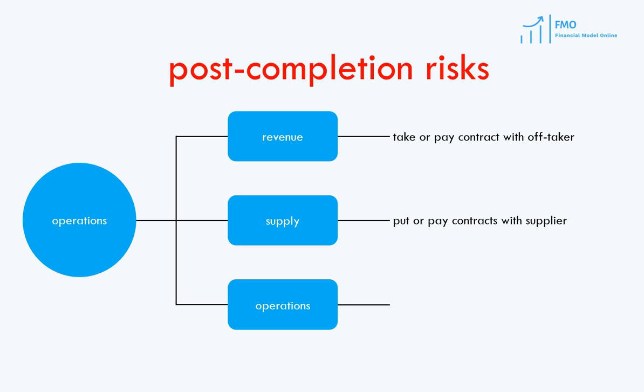And finally, it is operations risk. The O&M contractor responsible for the performance and maintenance of the facility receives variable and fixed payments for its services, as agreed in the O&M contract. However, if the performance of the project is worse than that specified in the contract, penalties will be applied to the O&M contractor.